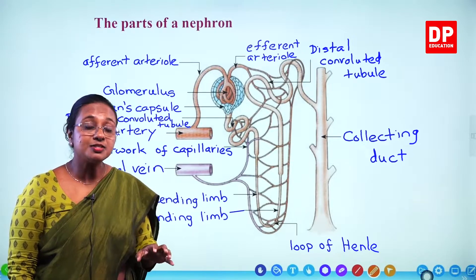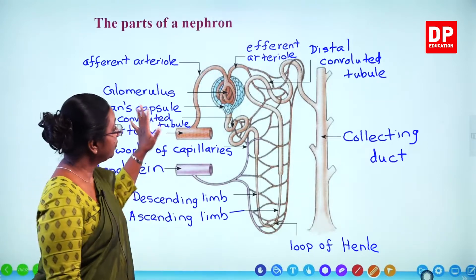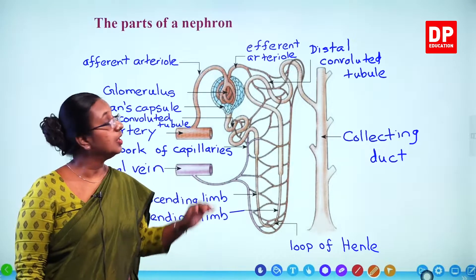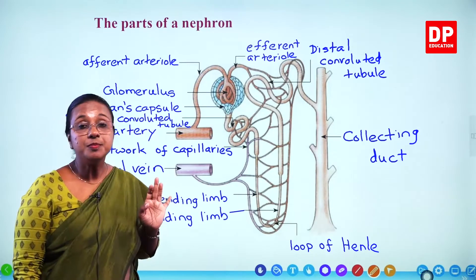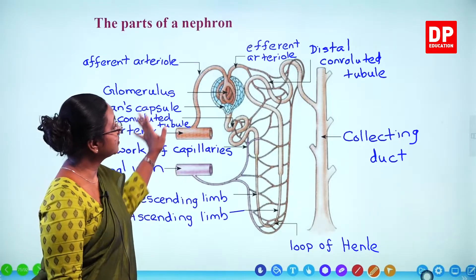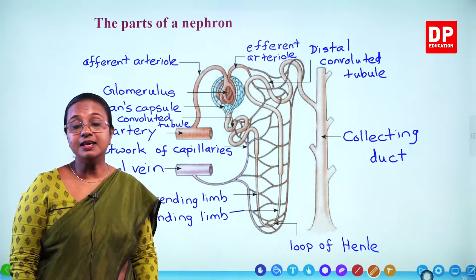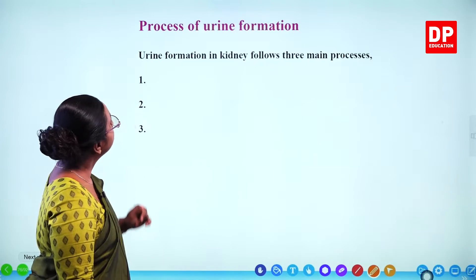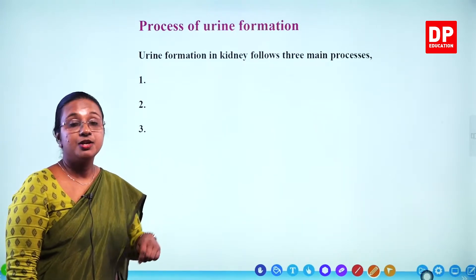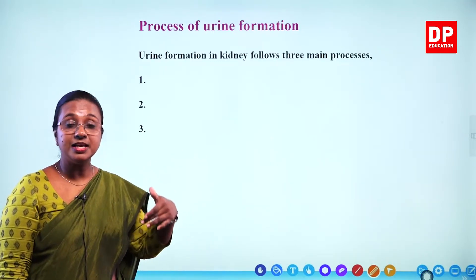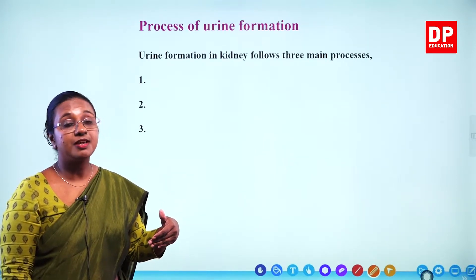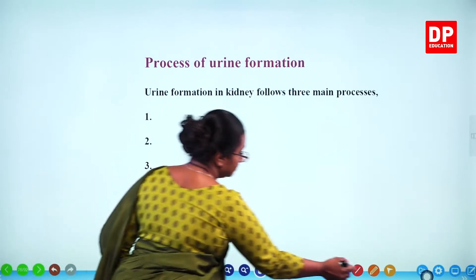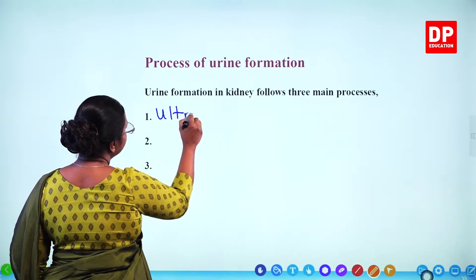The nephron is the structural and functional unit of a kidney. When given a diagram, you should be able to identify and label all its structures. We will now move on to the process of production of urine, which takes place within the nephron in three stages. Urine formation in the kidney follows three main processes, the first being ultrafiltration.